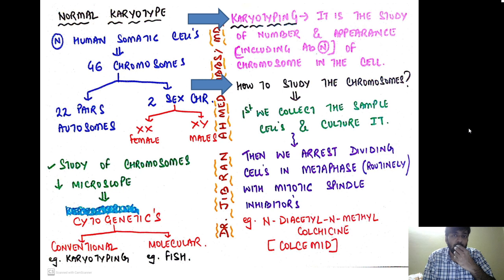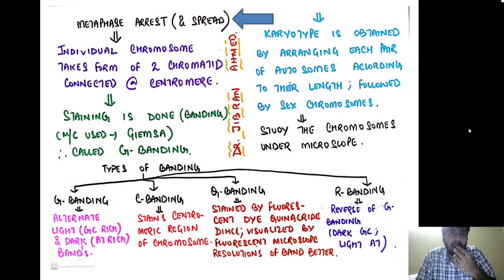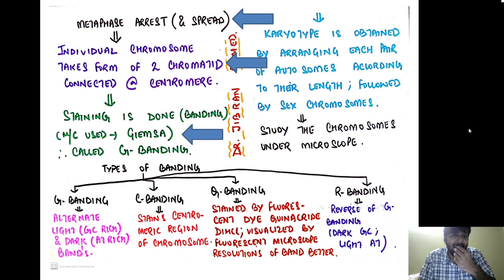To study the chromosomes, we first collect sample cells and culture them, then arrest the dividing cells in metaphase. We routinely arrest cells in metaphase with the help of mitotic spindle inhibitors — N-diacetyl N-methylcolchicine, also called colcemid. After the cell has been arrested in metaphase, each individual chromosome takes the form of two chromatids connected at the centromere. We then stain the chromosomes to observe them under the microscope; this staining is called banding, and the most commonly used stain is Giemsa, which is why we call it G-banding.